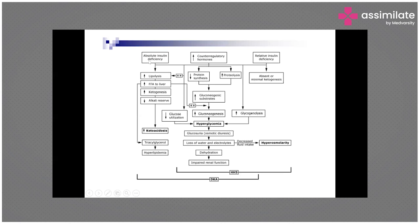As we see in this flow chart, when there is absolute deficiency of insulin, there will be lipolysis — fat will be mobilized and broken down to produce sugar. Even free fatty acids located in the liver will also be mobilized to produce glucose, and the end product will be ketogenesis, leading to more and more acid production. The alkaline reserve will go down and the end result is ketoacidosis.